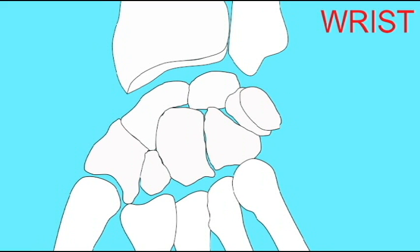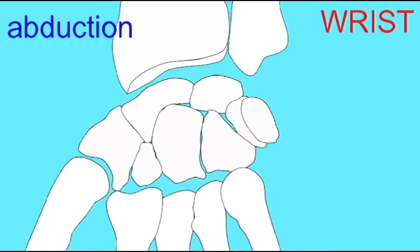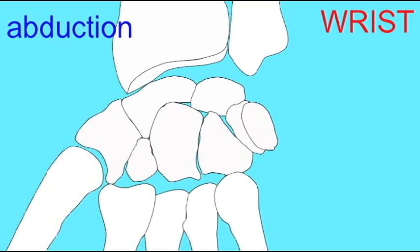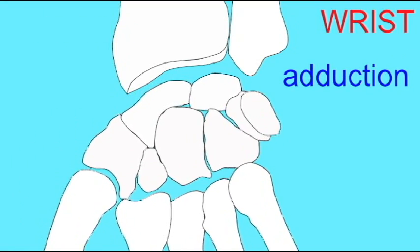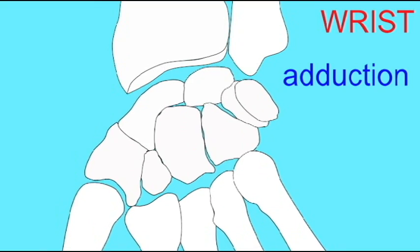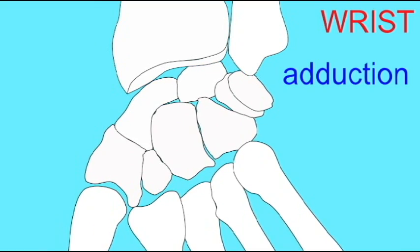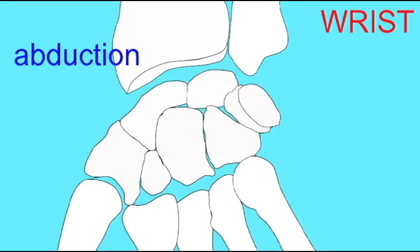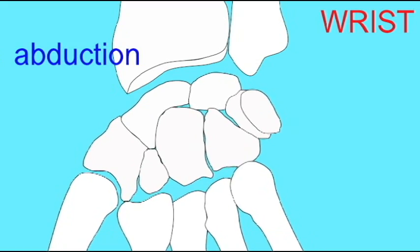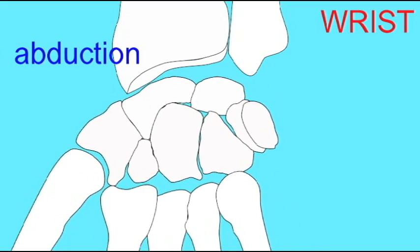Condyloid joints not only allow flexion and extension, they also allow movement in a second plane, and thus allow abduction — movement away from the midline of the body — and adduction — movement towards the midline of the body. So the wrist also allows the abduction and adduction of the hand.